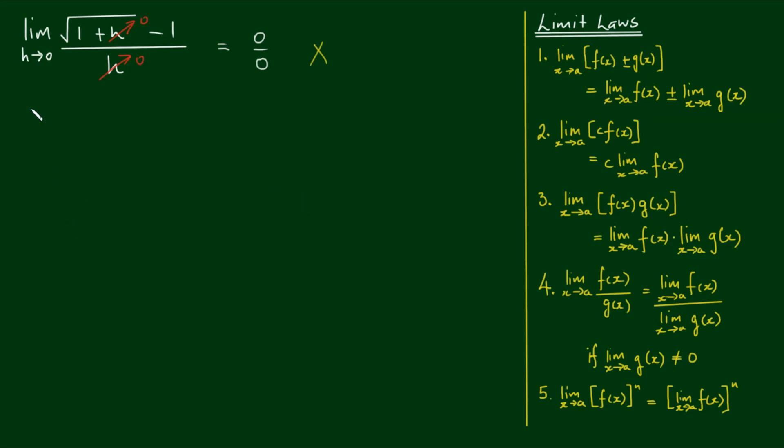So let's copy the limit. We've got the limit as h approaches 0 of the square root of 1 plus h minus 1 divided by h. What I want to do is get rid of this radical sign or square root term. To do that, I'm simply going to multiply the top and bottom by the conjugate of root 1 plus h minus 1, which is root 1 plus h plus 1. What I do to the top, I do to the bottom.